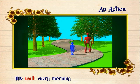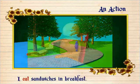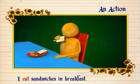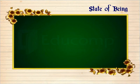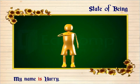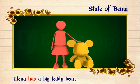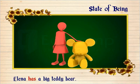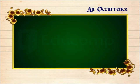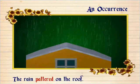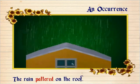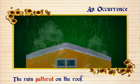And I eat sandwiches for breakfast. A state of being such as: my name is Harry, I am 12 years old, and Elena has a big teddy bear. An occurrence such as: the sunlight shone through the window, the rain pattered on the roof, and the snow glistened on the treetops.